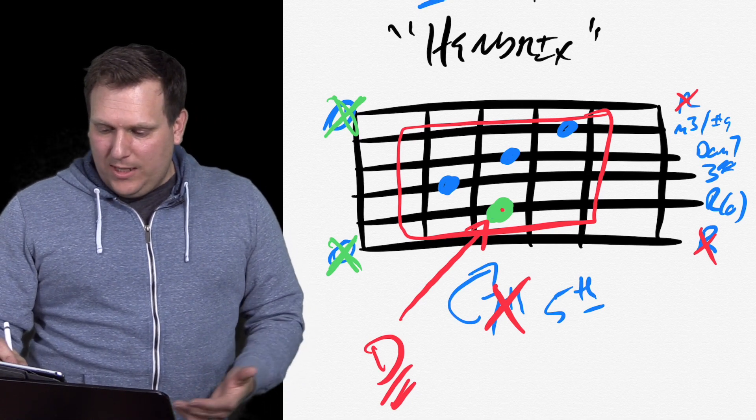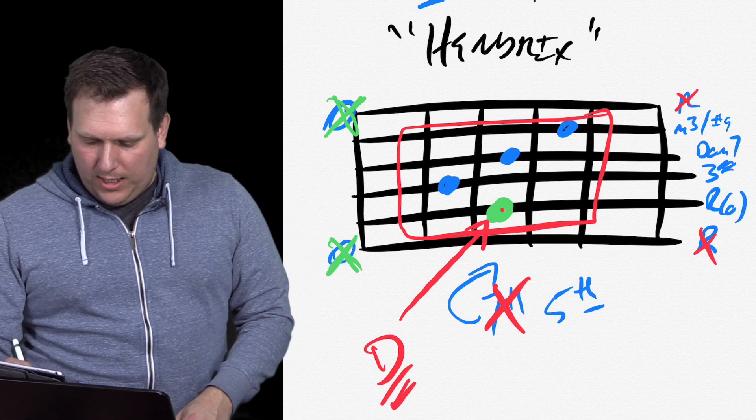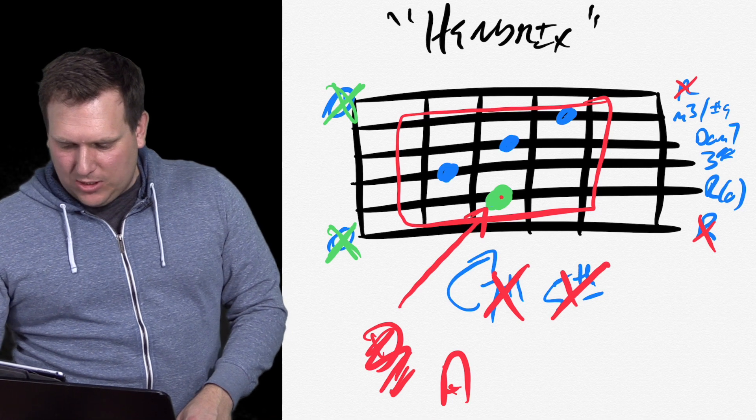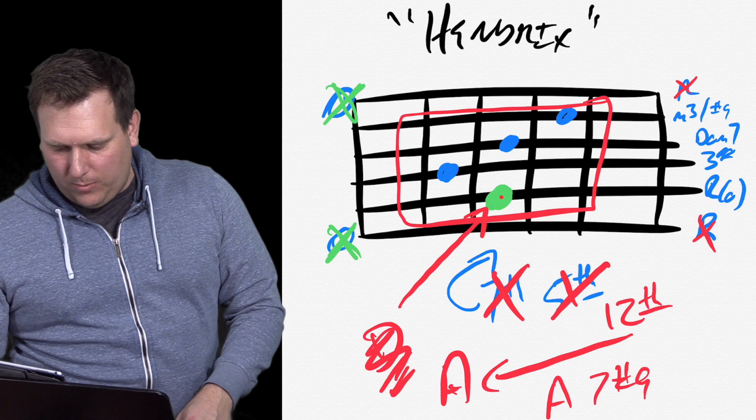So you can bring that anywhere across the fretboard. Now say we moved this and that was the two that we played that on the 12th fret where that note then becomes an A. Okay. So if this becomes the 12th fret and we have an A, now we have an A seven sharp nine.